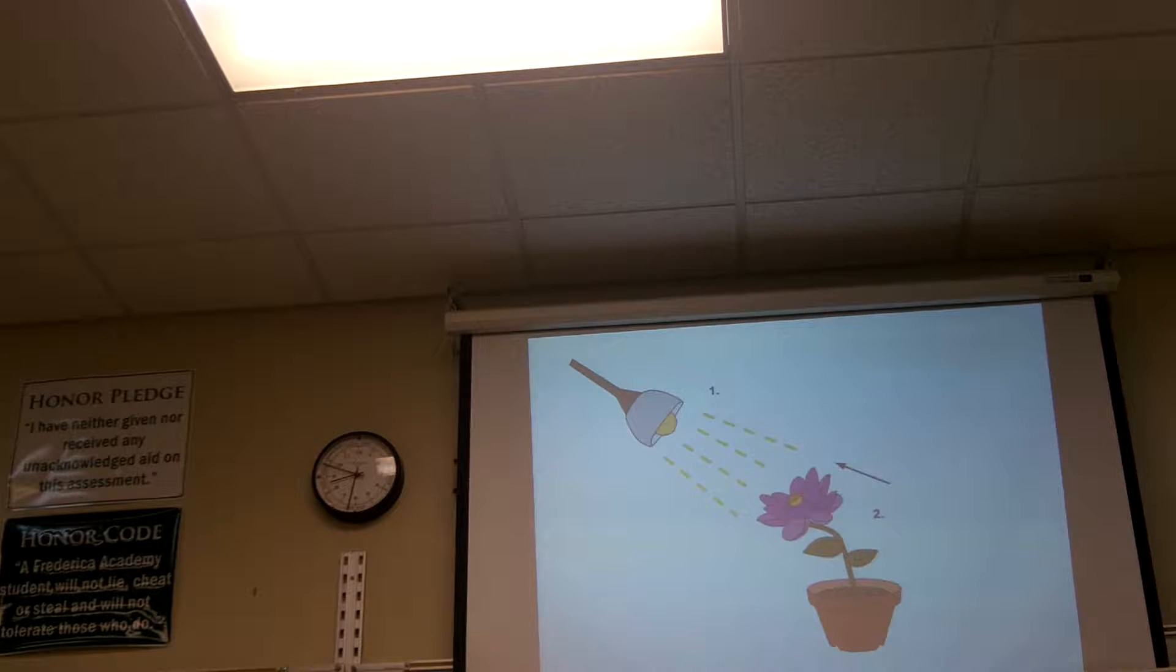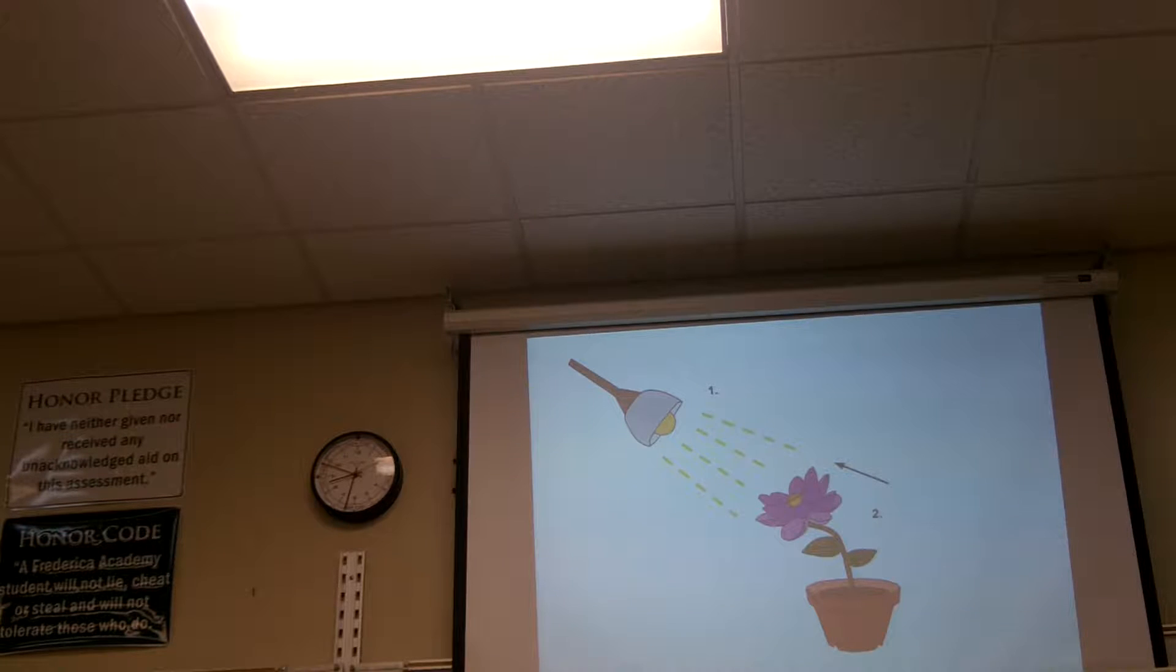This is actually known as positive phototropism. Positive means moving toward the light. You could have negative phototropism. Negative phototropism would be moving away from the light. You might have a plant root, for instance, moving away from the light. That would be negative phototropism.